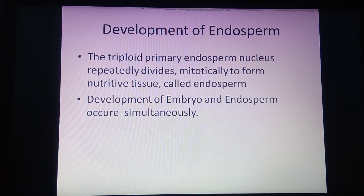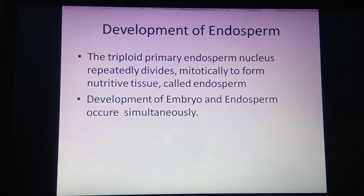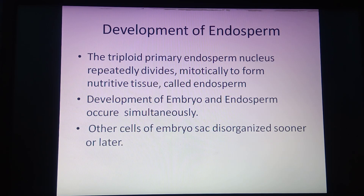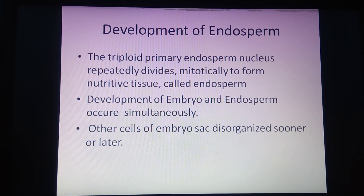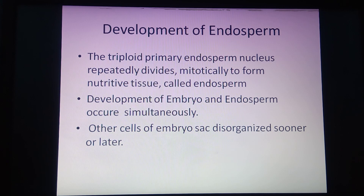The development of endosperm and embryo in angiosperms occurs simultaneously, because the union of the first male gamete with the egg and the union of the second male gamete with the secondary nucleus take place simultaneously. Other cells of the embryo sac — such as antipodal cells — undergo disorganization after double fertilization. One of the synergid cells is brushed open for pollen tube entry, and the remaining synergid also gets disorganized after double fertilization.